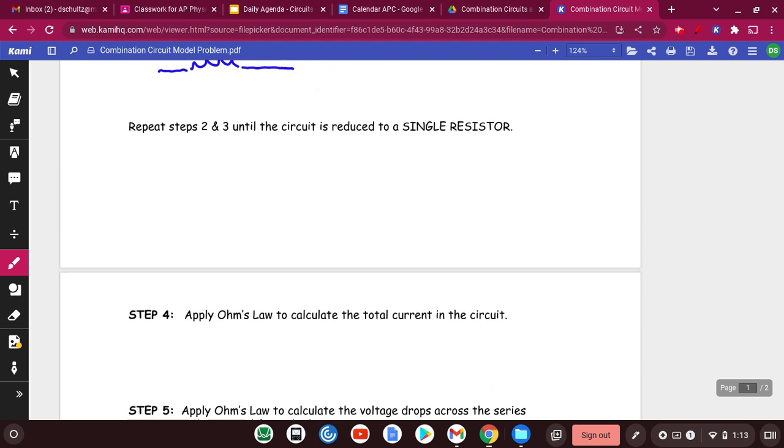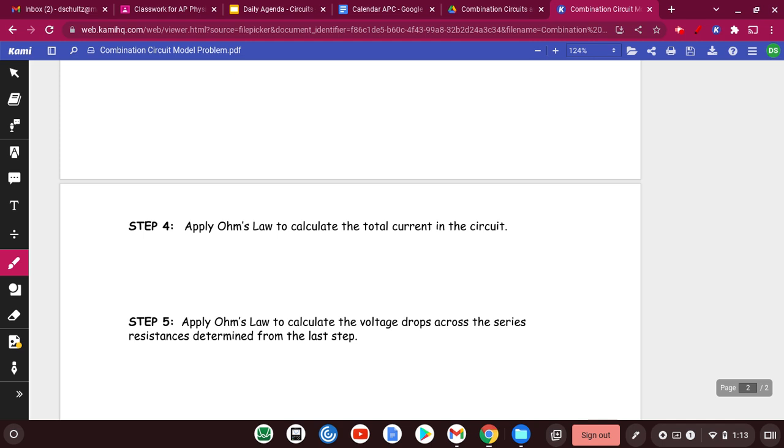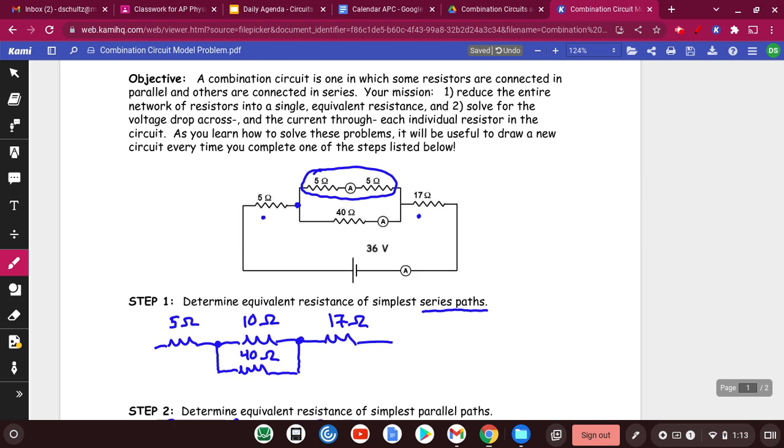So step four, we want to apply Ohm's law to calculate the total current in the circuit. Now what that means is that it means this current, the current that would be flowing here. So if we put an ammeter into the circuit right there, that's the total current.